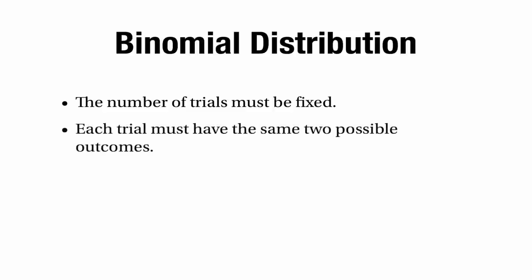Before moving on, let's check whether a binomial distribution is appropriate here. The first criterion — a fixed number of trials — is satisfied: 150 trials is definitely a fixed number. The second — each trial must have the same two possible outcomes — is fine: the teacher either connects or doesn't. The third criterion says trials must be independent. That's less certain: if the teacher hasn't connected, it may be due to some temporary glitch making it less likely he'll connect immediately after, so the trials might not be independent.